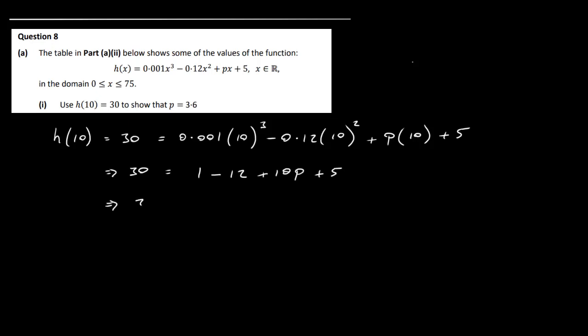So 30 is equal to, we have 10 cubed which is 1000, and 1000 times 0.001 is just 1. And 10 squared is 100, and 100 times 0.12 is just going to be 12. And then we have 10p plus 5. So we have 30 is equal to minus 11 plus 10p plus 5, minus 6. Bring that over, you've got 36 here is equal to 10p. That finally gives you 3.6 is equal to p. So that's it, we've shown that p is equal to 3.6.